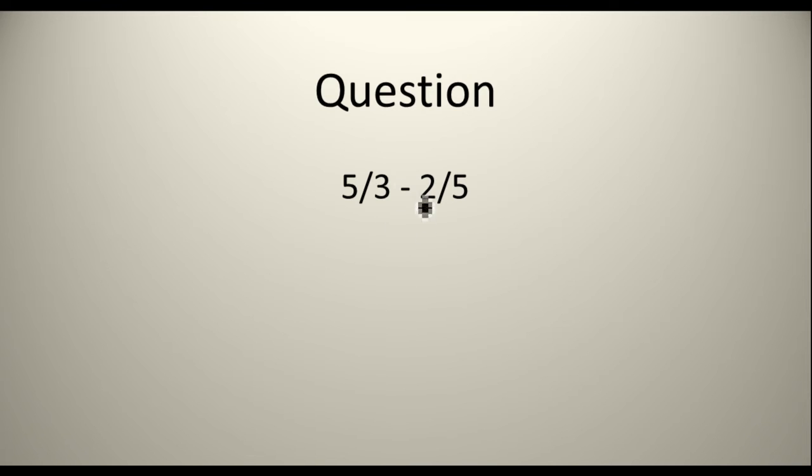So make sure you pause this and do the question yourself. And when you finish the question, press play. So we have five over three minus two fifths, which equals. Now we need to get the lowest common multiple here. So what do you think the lowest common multiple is? Let's work this out. So we have 3 times 5, which equals 15. So now we know that 15 is the lowest common multiple.